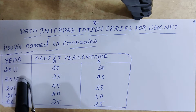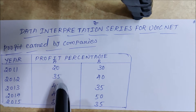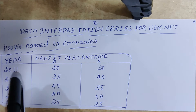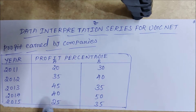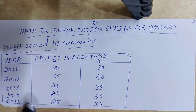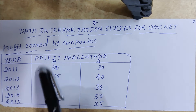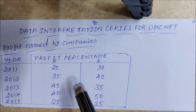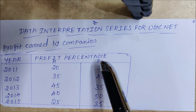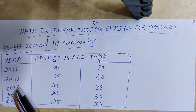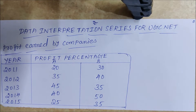The data covers years 2011, 2012, 2013, 2014, and 2015 for Company A and Company B profit percentages. Company A profit percentages: 20% in 2011, 35% in 2012, 45% in 2013, 40% in 2014, and 25% in 2015. Company B profit percentages: 30% in 2011, 40% in 2012, 35% in 2013, 50% in 2014, and 35% in 2015.